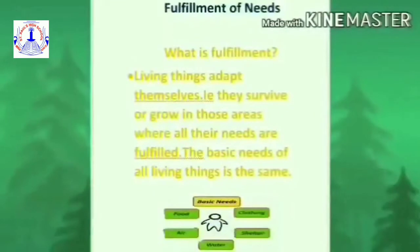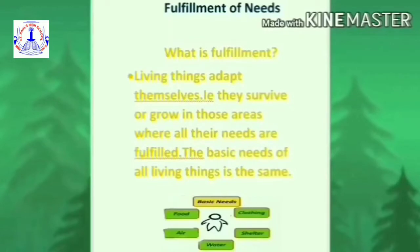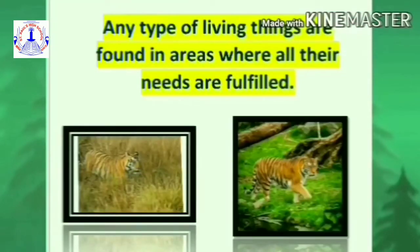Our next topic is fulfillment of needs. What is fulfillment? Living things adapt themselves — they survive or grow in those areas where all their needs are fulfilled. The basic needs of all living things are food, air, water, shelter, and clothing. For example, a tiger has stripes on its body. It hides in tall grasses so its prey cannot see it. When the tiger is hungry, it can feed on them. There are hills and mountains so that it can find shelter. These examples show that any type of living thing is found in areas where all its needs are fulfilled.